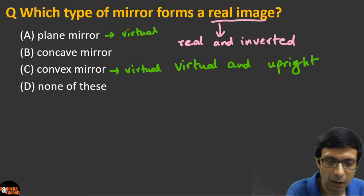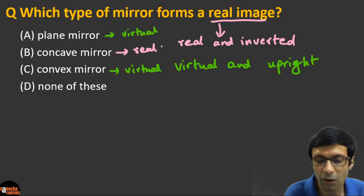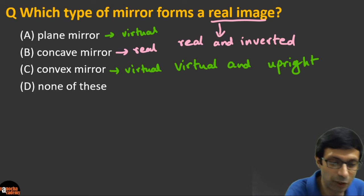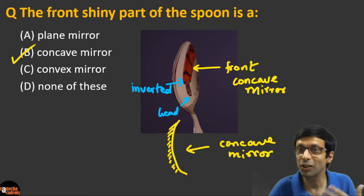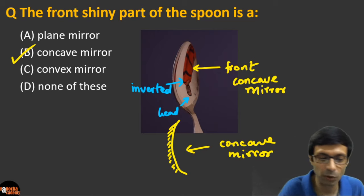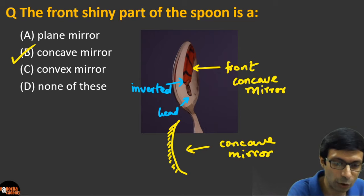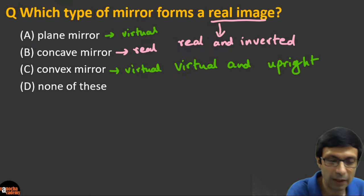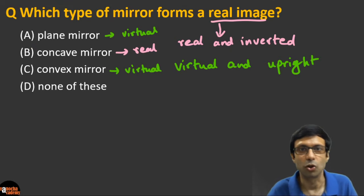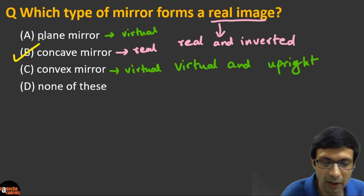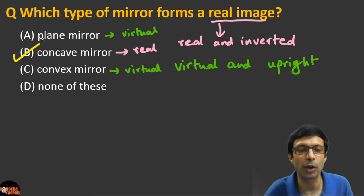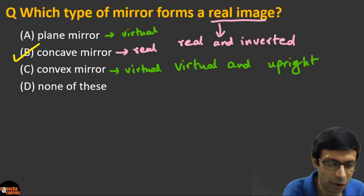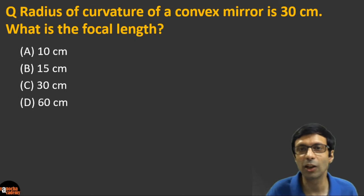It's only the concave mirror that can give a real and inverted image. Remember the spoon example — I appeared inverted when looking at the concave front of the spoon. So the correct answer is (b) the concave mirror. Analyze carefully and don't make a silly mistake.